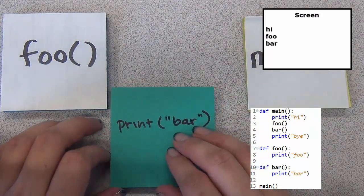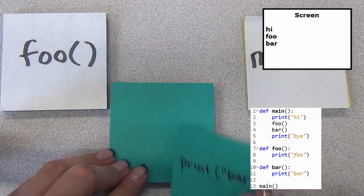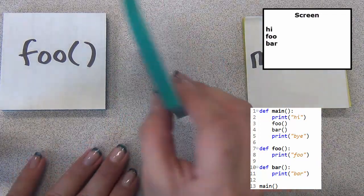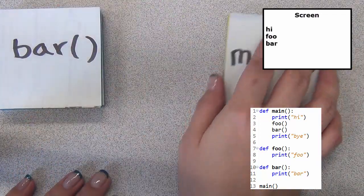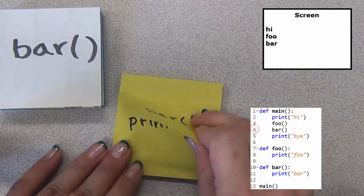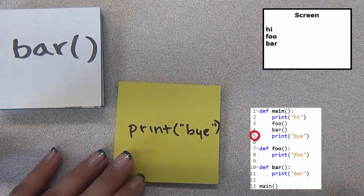After printing bar, I move on, but find that there is nothing left to execute in the function. We have completed the call to bar and move on to the next line, which says to print bye.